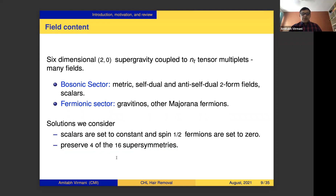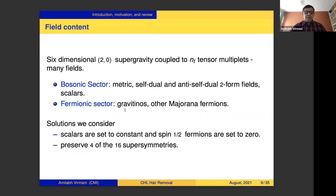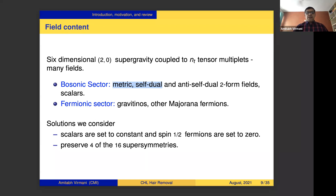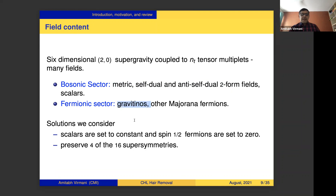We will not set the gravitinos to zero. We start with the black hole solution that has the metric and a self-dual field turned on, then look for perturbations where the metric, anti-self-dual fields, or gravitinos are changed. This is what we will do.